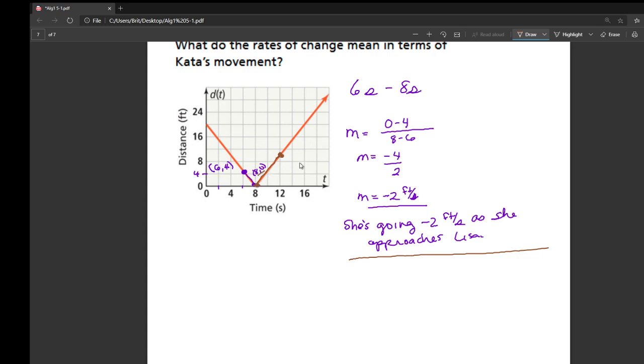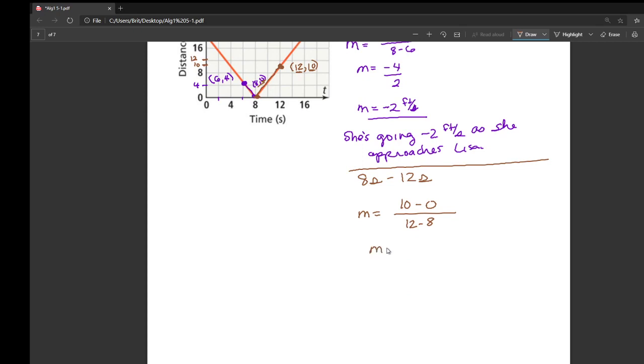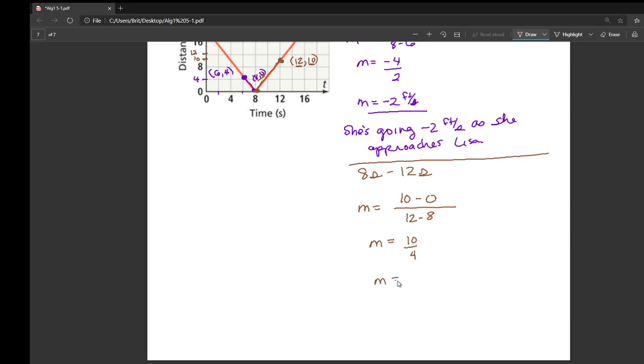Now for this one, we have one end point at eight, zero. And this one, it's halfway here. So if this is four away, this one's 12, halfway between eight and 12 is 10. So this is at 12, 10. From eight seconds to 12 seconds, her average rate of change is going to be 10 minus zero over 12 minus eight. So 10 minus zero is 10. 12 minus eight is four. 10 divided by four is about 2.5. And this again is in feet per second.